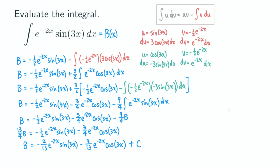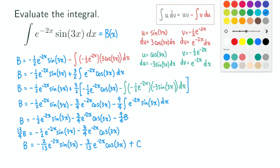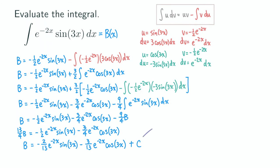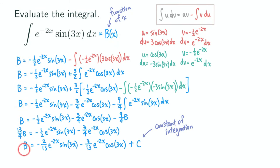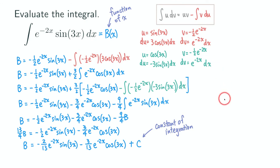Now this C is a constant of integration, while B is a function of x — make sure you see they are not the same, even though I omitted the parentheses with x. B is still a function. Okay, so that's it — this is a long problem. I will do the same problem again using the table method of integration by parts. Thank you for watching, see you next time.